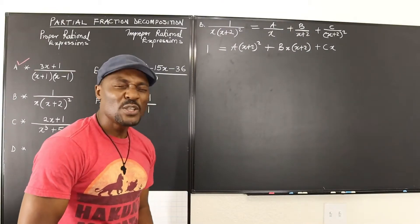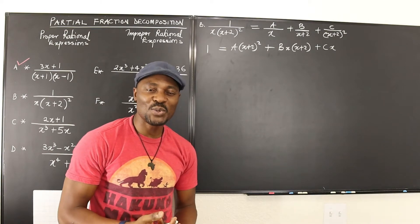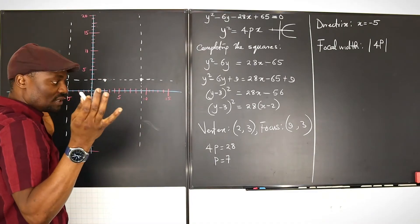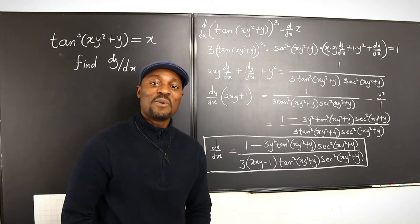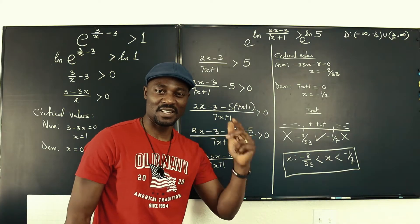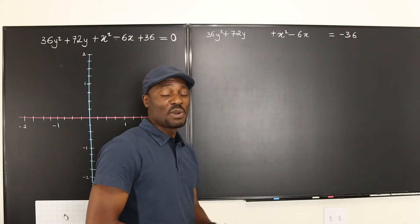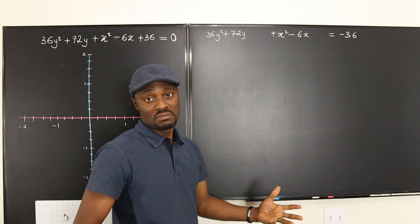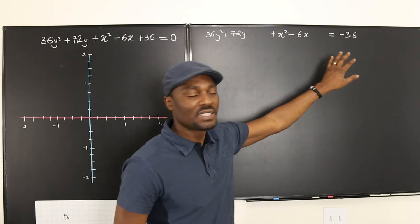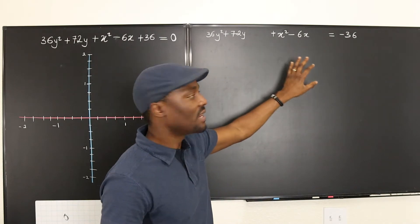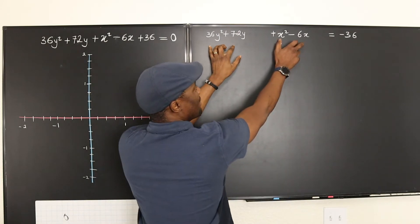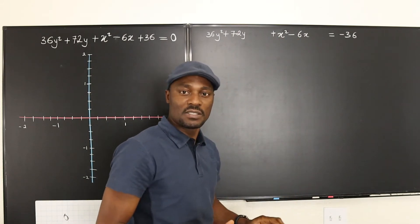Let's complete the squares. This is how you prepare the grounds for completing the squares. You want to write each quadratic expression separated from the other one, and then you take the number — this 36 — and take it to the other side. So what you have here are just the quadratic expressions.